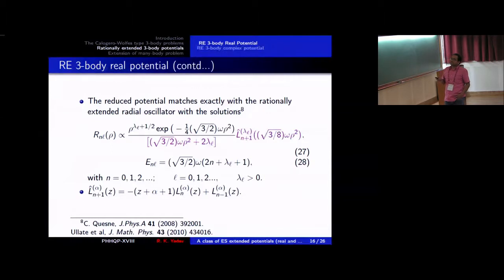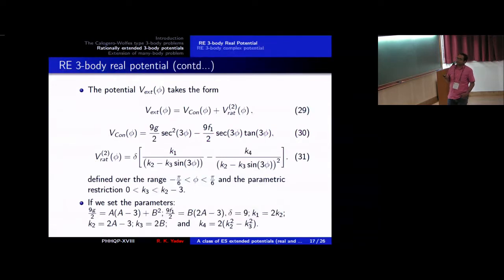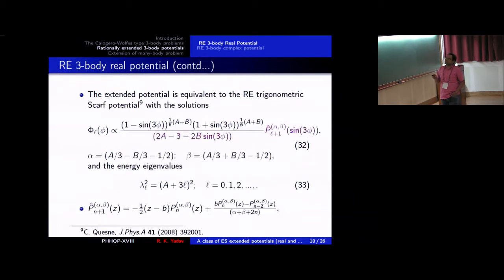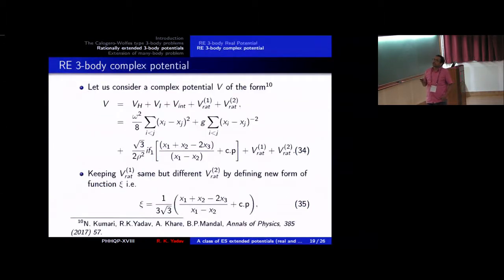This exceptional Laguerre polynomial is generally known as the X1 exceptional case, as discussed by Lévai and others. The exceptional polynomial is a linear combination of two usual Laguerre polynomials. Similarly, for the phi-dependent (angular) case, we get an extended potential whose conventional part is the trigonometric Pöschl-Teller potential, plus a rational term. The solution for this potential is written in terms of exceptional Jacobi polynomials, which can also be expressed as a linear combination of usual Jacobi polynomials.